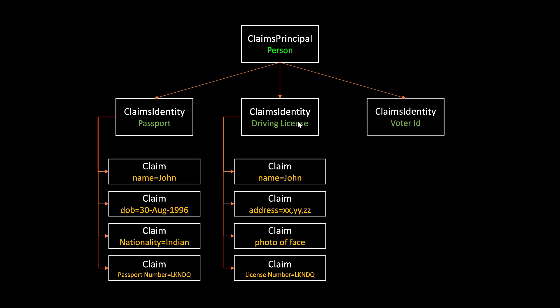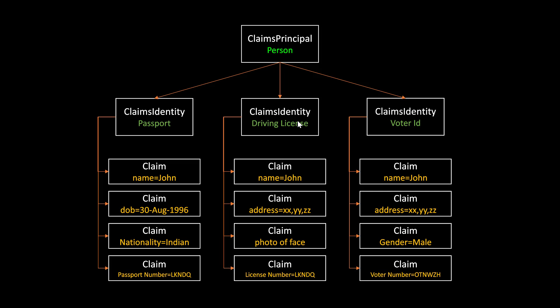Suppose a person goes to a polling booth to cast his vote. The voter ID of the person is a claims identity because it contains claims about the user like name, address, gender, voter number, etc. To summarize: a claim is a statement about the user — basically a key-value pair, like name equal to John, date of birth equal to 30th August, nationality equal to Indian. Multiple claims can be present in an identity and it's called claims identity. A claims identity carries the claims about the user, and the user itself who is being authenticated is called a claims principle.